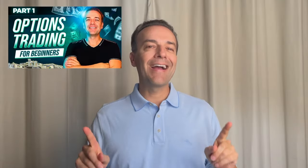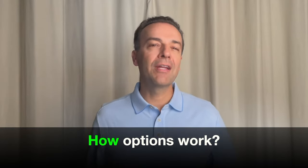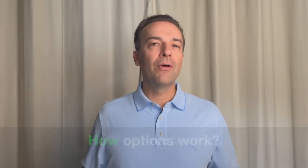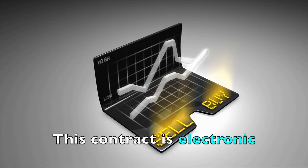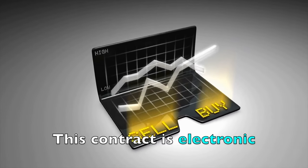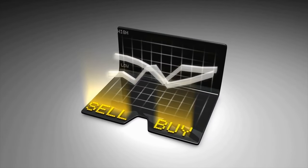In part one of this beginner's guide to options video series, we introduced you to the idea of options. You learned that you can buy a call option if you think the underlying stock will go up in price, and you can buy a put option if you think the underlying stock will go down in price. Although the agreement between a buyer and seller of an option is called a contract, it doesn't actually involve a real piece of paper. Everything is done electronically. You can buy or sell an option contract with your stockbroker — it literally just takes a few seconds to buy or sell an option contract from your computer or from the app on your phone.